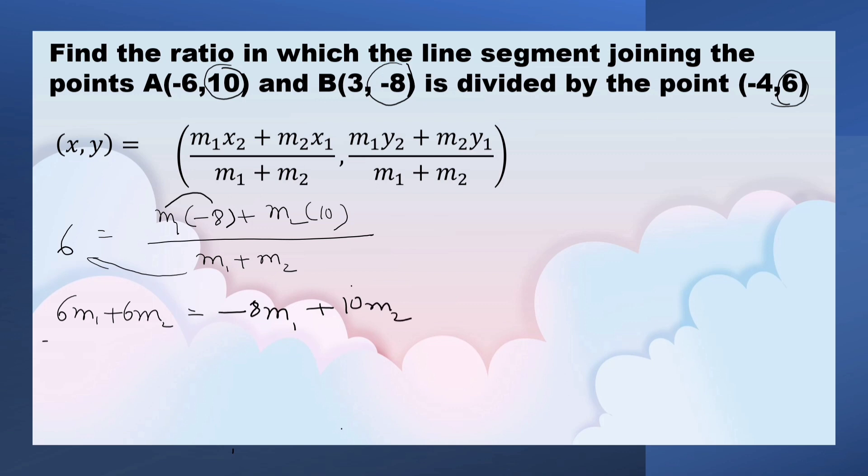Now, collect M1 on one side. 6M1 plus 8M1 is equal to 10M2 minus 6M2. Here, what is the value? 14M1 is equal to 4M2.